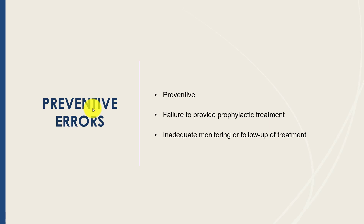Another type of medical error is a preventive error — here there is a failure to provide prophylactic treatment. For example, a patient comes in for migraines and the clinician does a full detailed history and physical. In that history, they identify the patient has a significant family history for breast cancer, but they only focus on the migraine and never follow up on that breast cancer risk, never discussing high-risk screening or preventive actions. In the future, the patient develops a breast cancer that may have been prevented earlier.